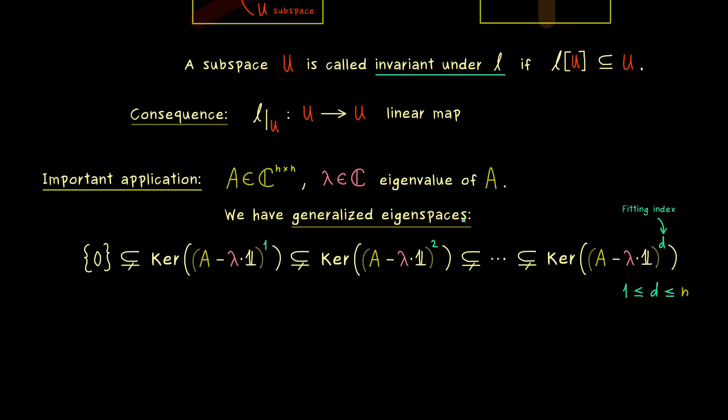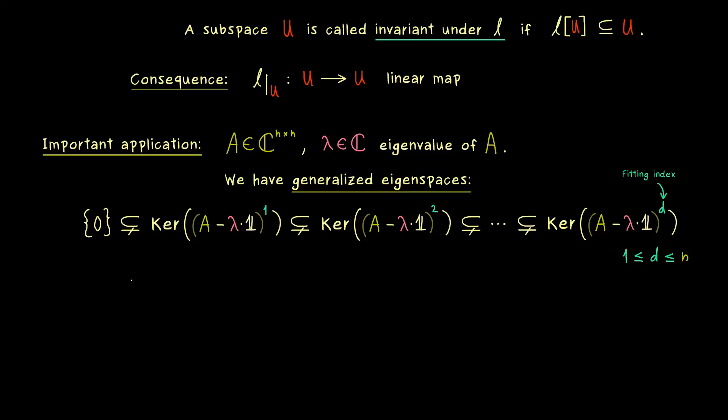So this is important to remember: d always lies between 1 and n. Indeed, different matrices can have different fitting indices. Okay, so this was the description of the generalized eigenspaces. But it turns out, as we have shown in the last video, that we have the same chain for the ranges. The only difference is that now the ranges get smaller when we increase our exponent.